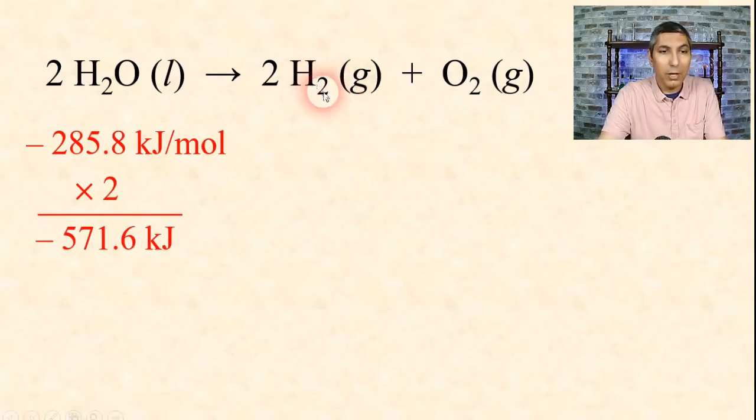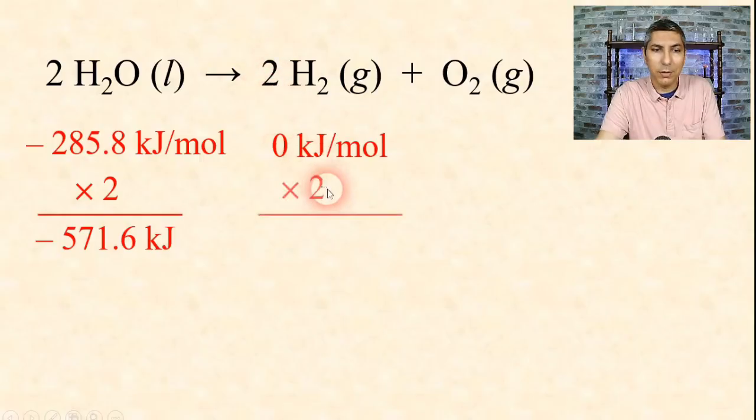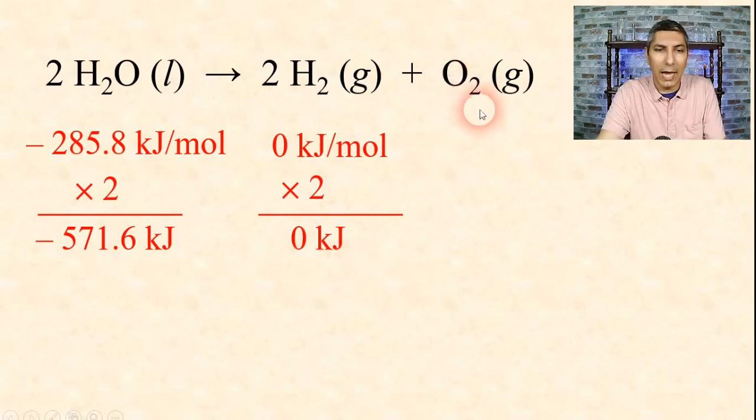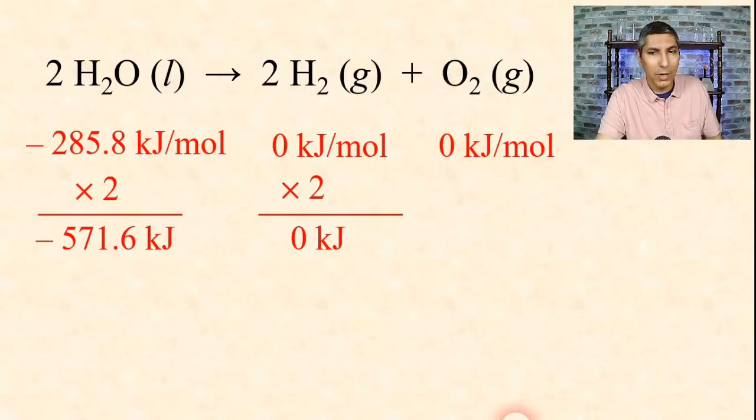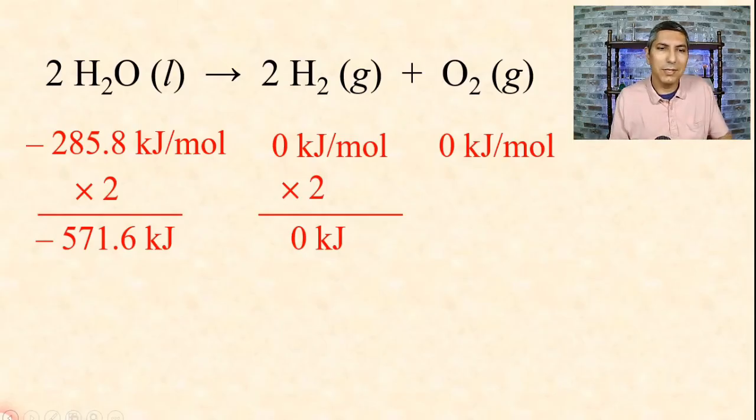That's per mole. Notice there's a 2 right here. That tells us we have 2 moles in this process, so we're going to take this value and multiply it by 2. Negative 285.8 kilojoules per mole times 2 moles gets us negative 571.6 kilojoules. We can do the same thing for hydrogen. The enthalpy of formation of hydrogen gas is 0 kilojoules per mole. There are 2 moles of this, but any number times 0 is still 0. For oxygen gas, its enthalpy of formation is also 0 kilojoules per mole.